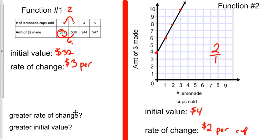So what's my greater rate of change? We've got $3 per cup and we've got $2 per cup. Function number 1 is greater and you'd say it's $3 per cup. What's the initial value? This is $4. Function number 1 is $32. Definitely function number 1.